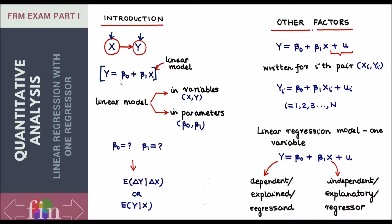The equation looks something like this: y is equal to beta-naught, a constant, plus some number beta-1 times the variable x. So this is what we call a linear model.